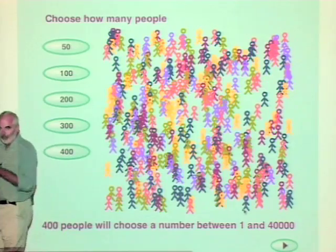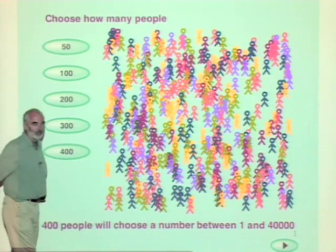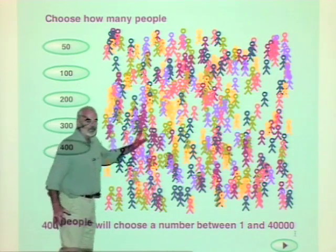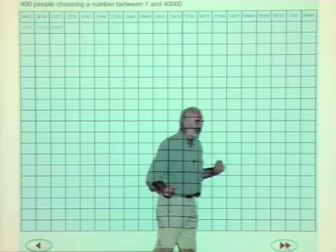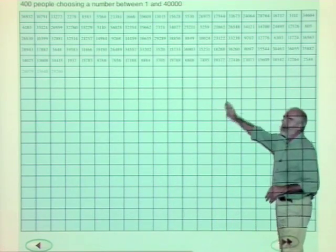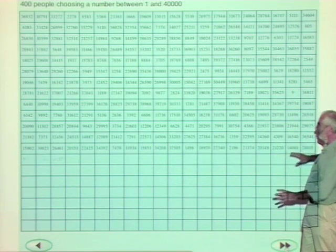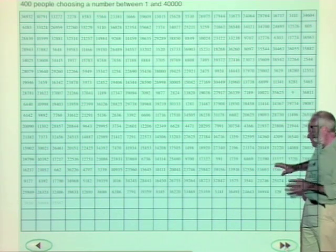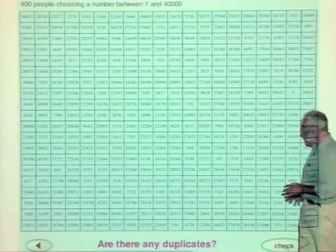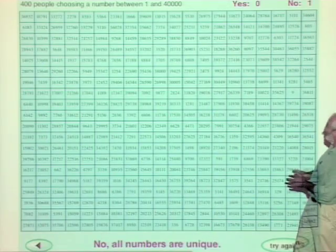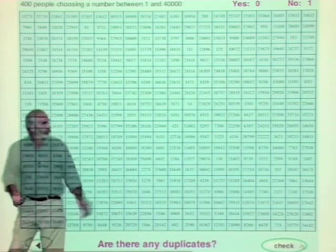So what happens if you've got a really big group — say 400 people in the room? Well, 400 divided by 2 is 200, and 200 times 200 is 40,000. Let's get them to choose between 1 and 40,000. This is 400 numbers chosen at random between 1 and 40,000. It's quite difficult to see if there are any pairs, but we have a program to check. No duplicates that time — they did it. As I said, it doesn't always work, but seven out of eight times there should be a duplicate.